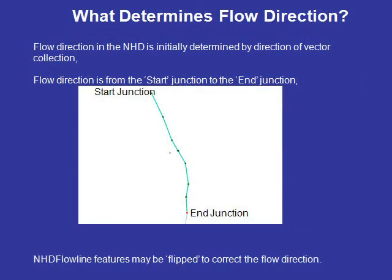Flow direction in the NHD is initially determined by direction of vector digitization. In other words, flow direction is from the start junction to the end junction. With that said, any NHD flowline feature may be flipped to correct the flow direction.